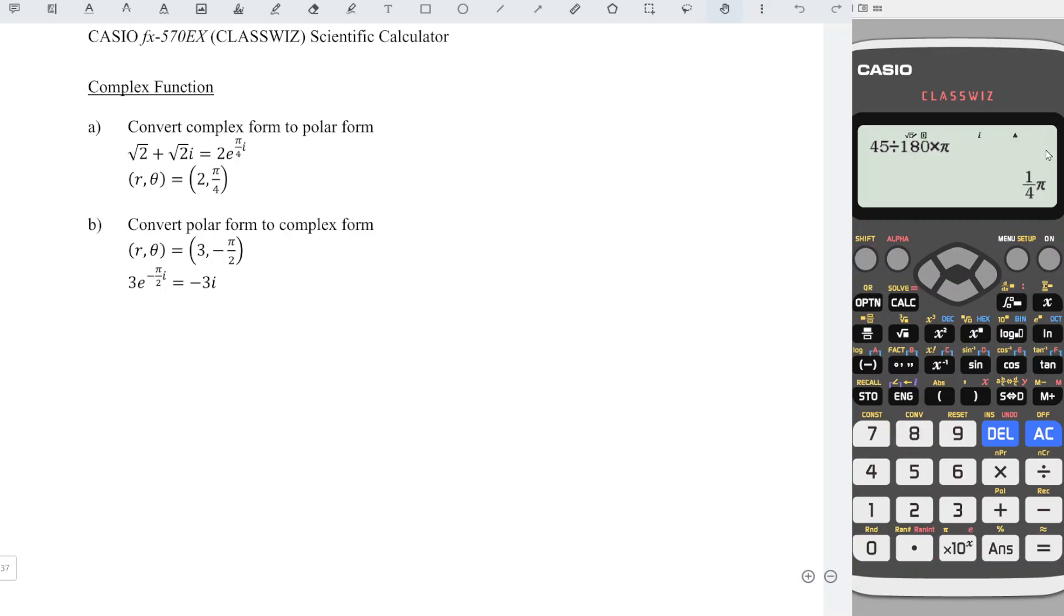For part B, convert polar form to complex number. First enter the value of r which is 3, shift ENG to get the angle sign, followed by the angle -π/2.